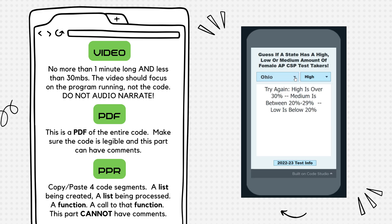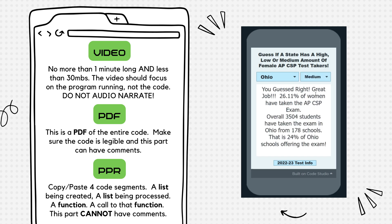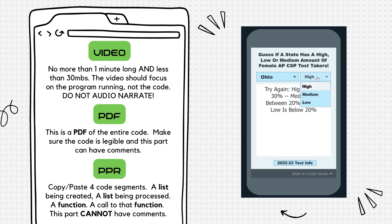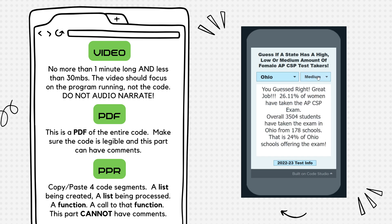Back to the three components of your digital portfolio — let's start with the video. You'll need to submit a video no more than one minute long and less than 30 megabytes. The video should focus on the program running, not the code. You should show the input and output of your app.